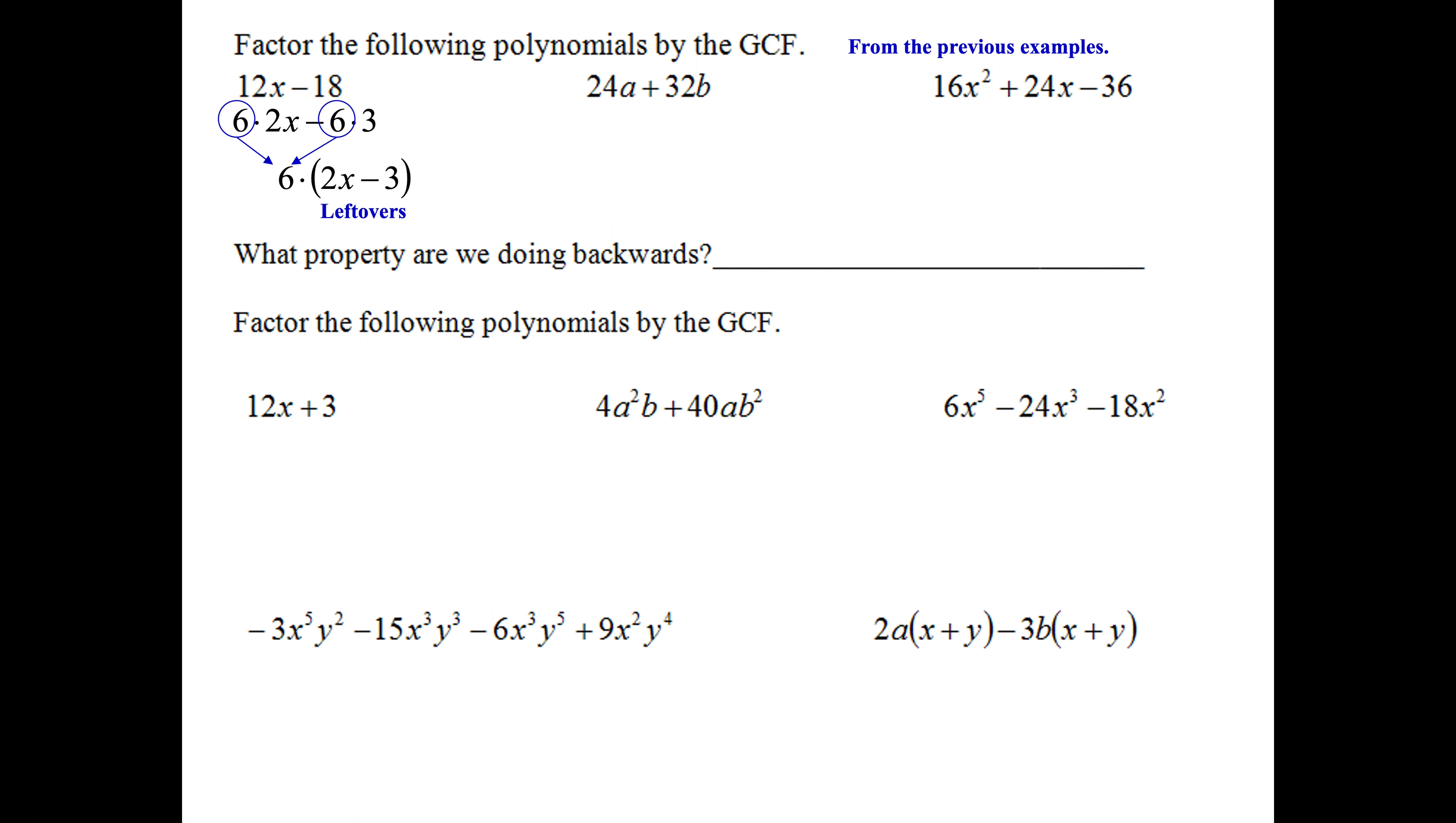We saw with 24 and 32, our GCF was an 8. 24 is 8 times 3a, plus 32, 8 times 4b. Circle those 8s, put them in front of the parentheses. Leftovers, 3a plus 4b in the parentheses.